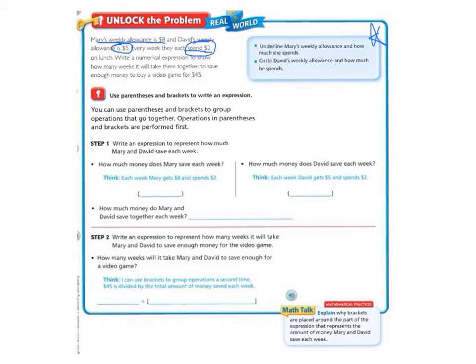Okay, now I think we're ready. It says, use parentheses and brackets to write an expression. You can use parentheses and brackets to group operations that go together. Operations in parentheses and brackets are performed first. So we're going to go through this slowly. Step one says, write an expression to represent how much Mary and David save each week.